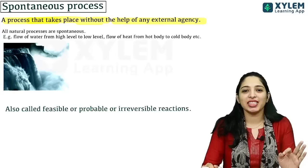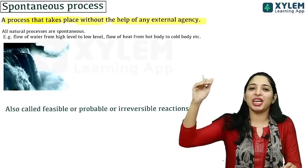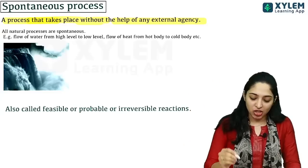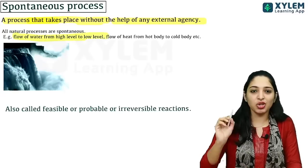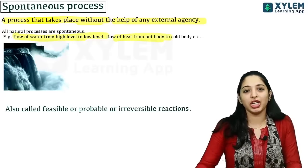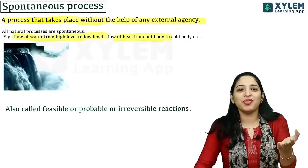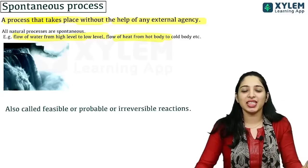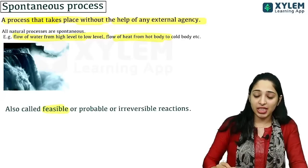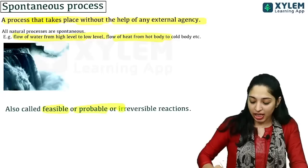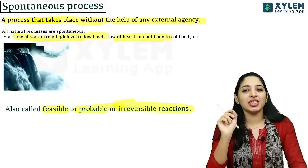The best example is water flow — water flowing from a high level to a low level. Also, heat flowing from a hot body to a cold body. These are examples of spontaneous processes. Spontaneous processes are also called feasible, probable, or irreversible reactions. All spontaneous reactions are irreversible reactions.